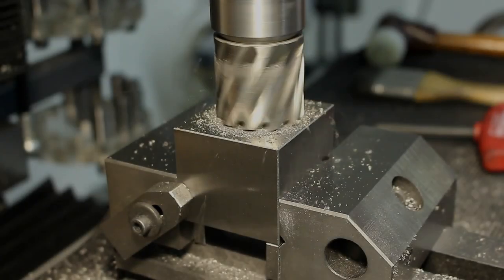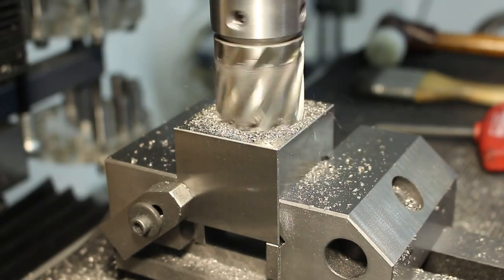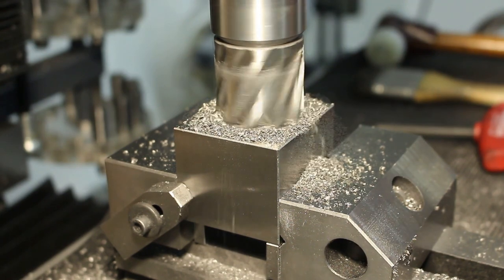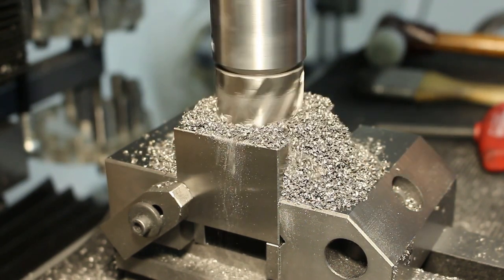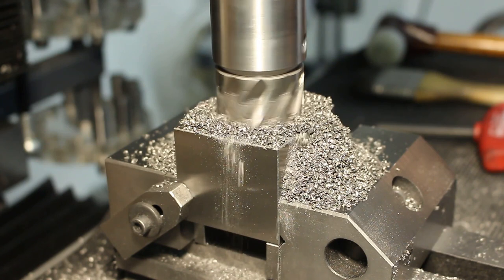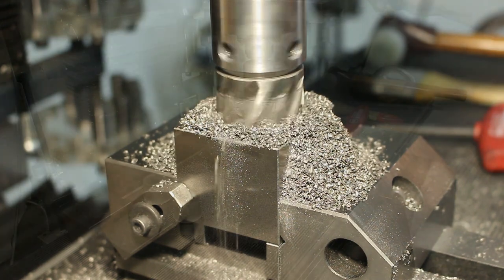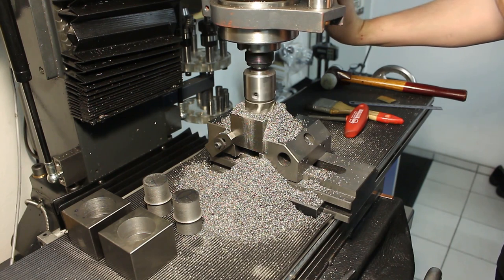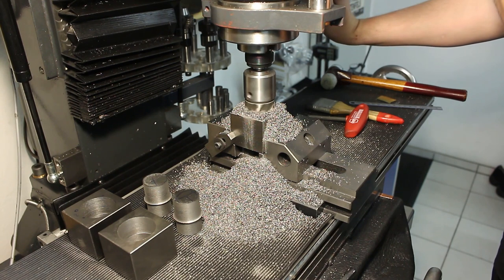This is a customer project where I needed some 40 millimeter precision holes in some cast iron blocks. And to speed up the process I ordered a 38 millimeter annular cutter, and that made quick work of those holes.